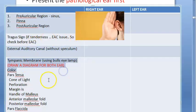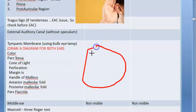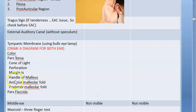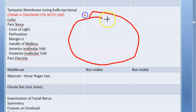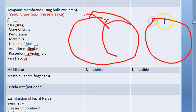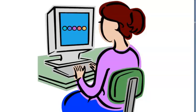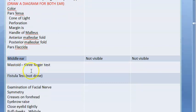For the tympanic membrane, draw a diagram for both ears. Note the color, any perforation, and its type — central, subtotal, marginal, or attic perforation. Also comment on the cone of light, handle of malleus, anterior malleolar fold, and posterior malleolar fold. For the middle ear, you will note 'not visible.' Then check the mastoid.